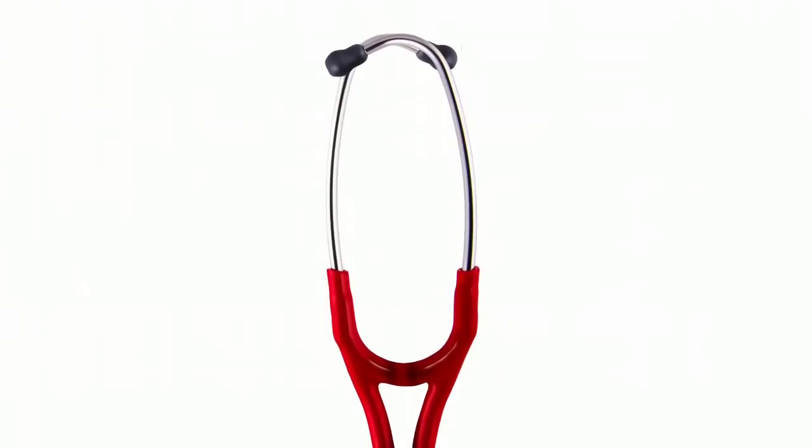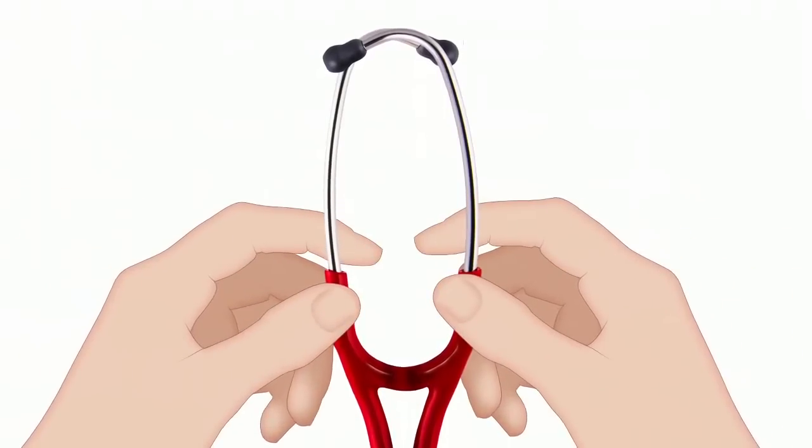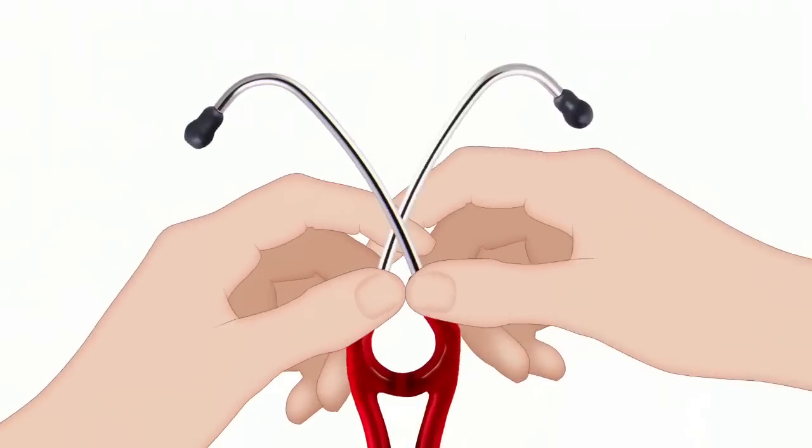To adjust the tension of the headset, hold on to both ear tubes and either pull them apart or squeeze them together.